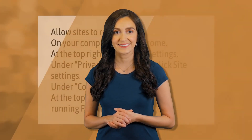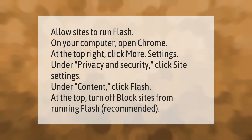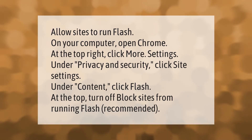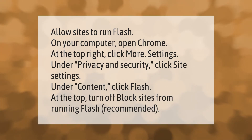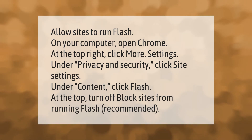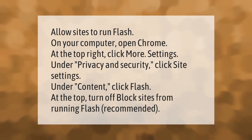To allow sites to run Flash on your computer: open Chrome, at the top right click More, then Settings. Under Privacy and Security, click Site Settings. Under Content, click Flash. At the top, turn off "Block sites from running Flash."